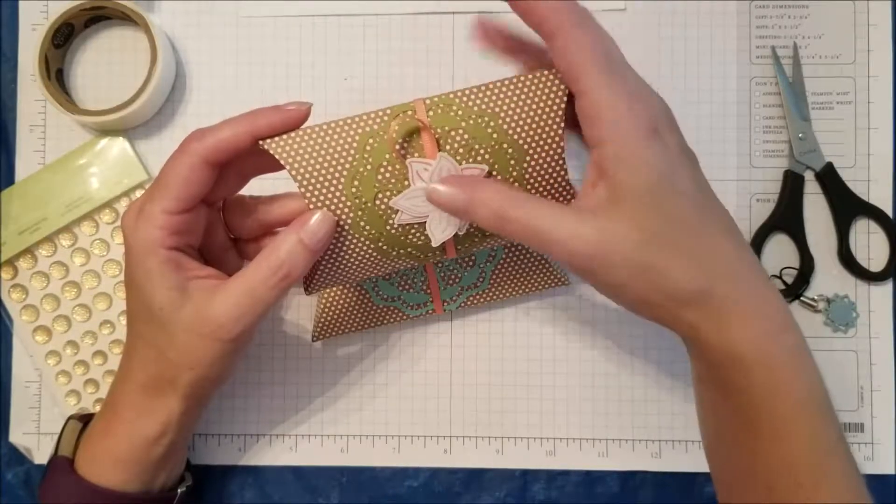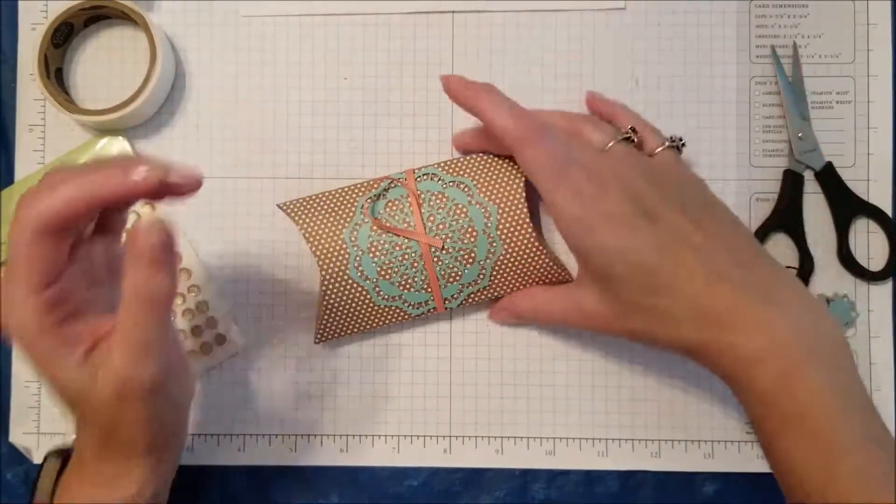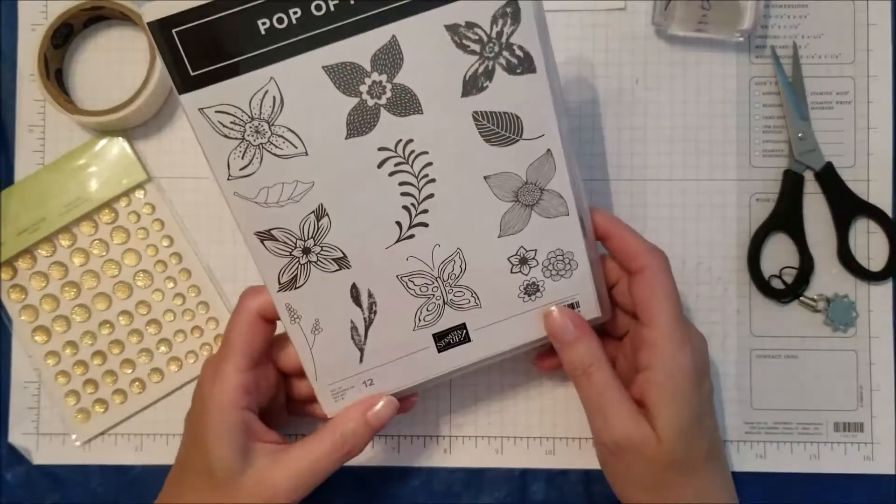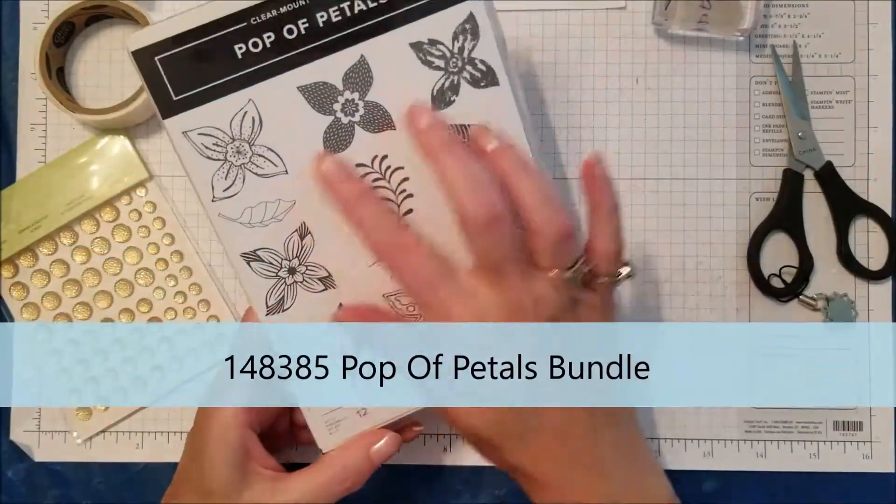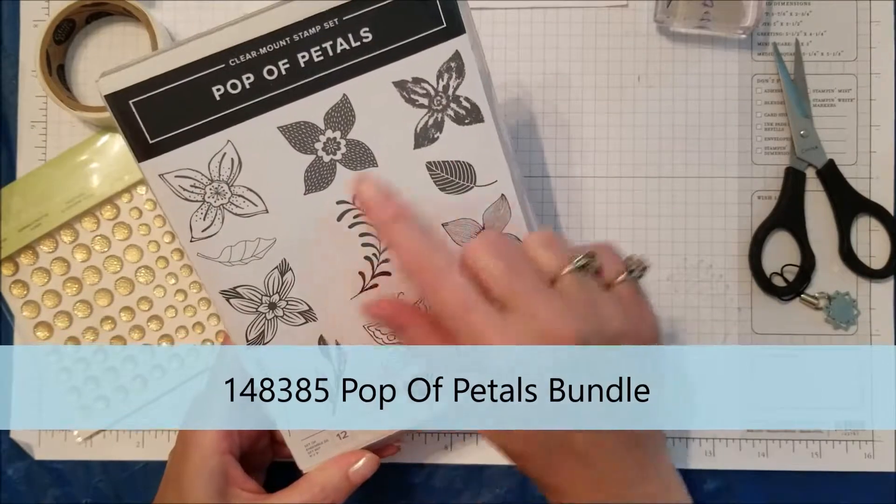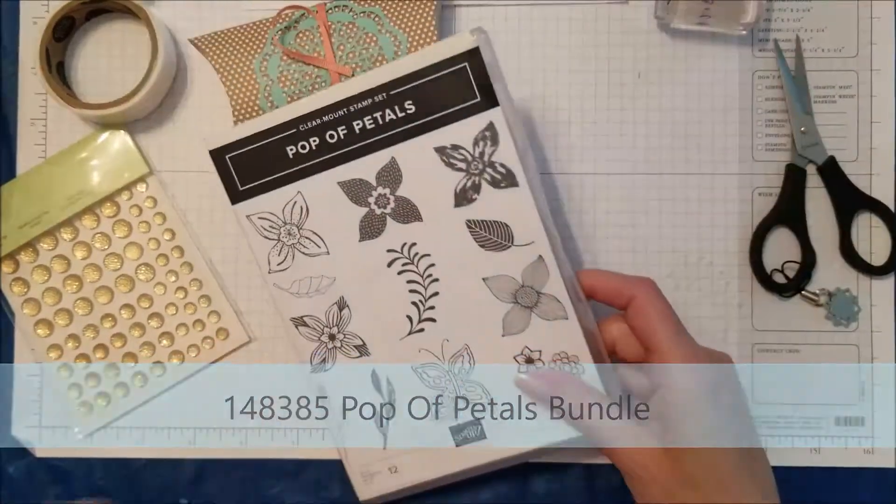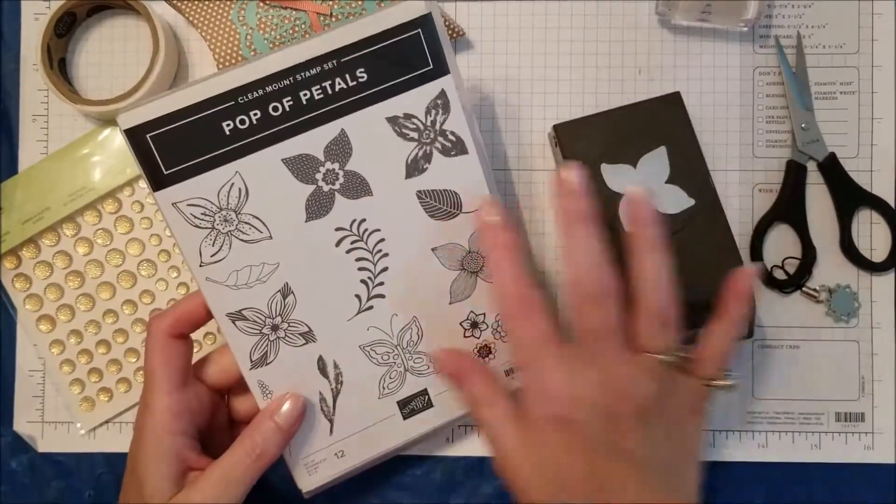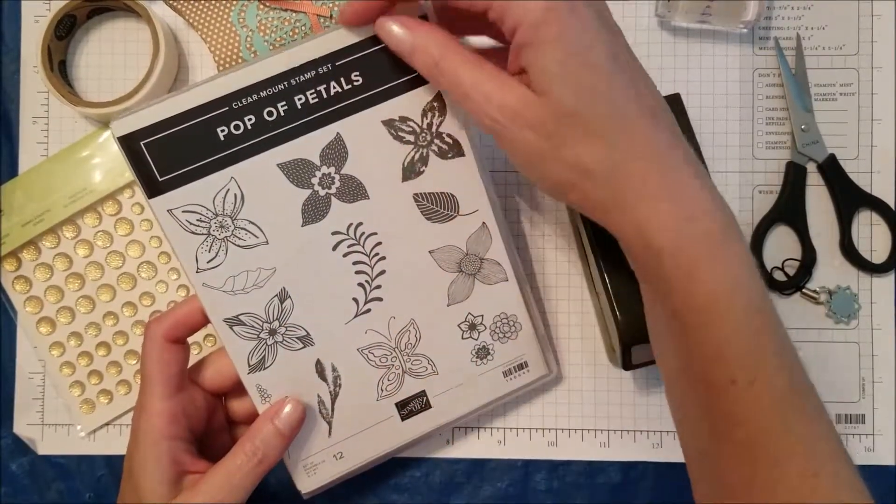The flower I'm going to use, one of my new favorite stamp sets, I love this Pop of Petals. It's got all different flowers on it and it has a coordinating punch that goes with it. I love these, it kind of took the place of Flower Shop that we used to have.